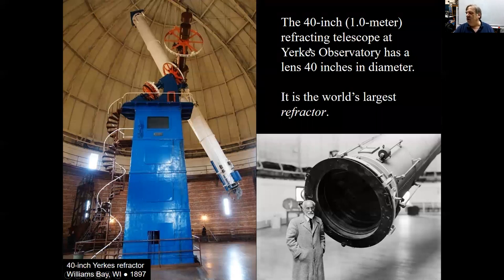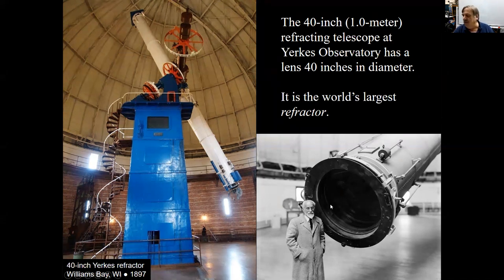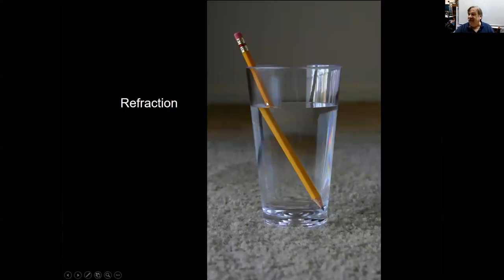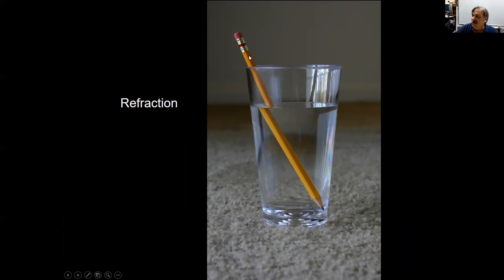The 40-inch refracting telescope at Yerkes Observatory has a lens 40 inches in diameter. It's the world's largest refracting telescope because it uses lenses — the big objective that gathers the light is 40 inches in diameter, that's why they call it a 40-inch telescope. Refraction is the property of light that makes light bend when it passes from one material — say air — to another — say water — because the speed of light in water is less than in air, the speed in air is less than in empty space, and the speed in glass is less than in water. When light goes from a medium where its speed is higher to one where it's lower, it bends. That's how lenses bend and focus light.